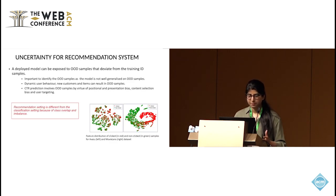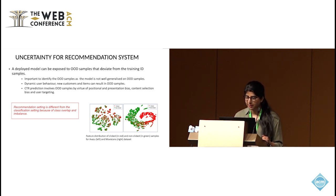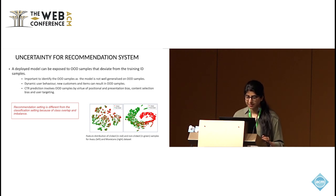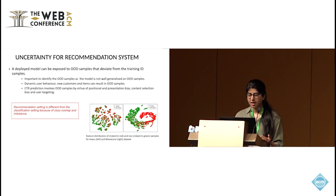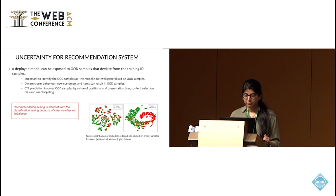A deployed recommendation system model can be exposed to new items or users that deviate from the training data distribution, and it is important to identify those OOD samples as the model is not well-generalized on those samples. Uncertainty for detecting those OOD samples is a well-defined problem for classification datasets. CTR prediction is also modeled as a classification problem, where the goal is to classify an input into two classes: clicked and not clicked. But most state-of-the-art uncertainty OOD detection frameworks are only evaluated for classification dataset settings and are not tested for recommendation systems.